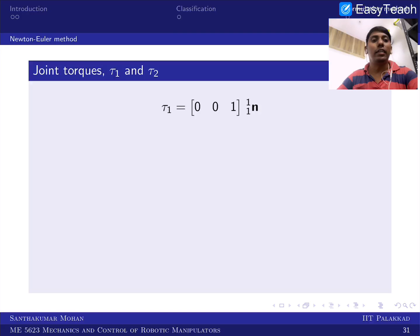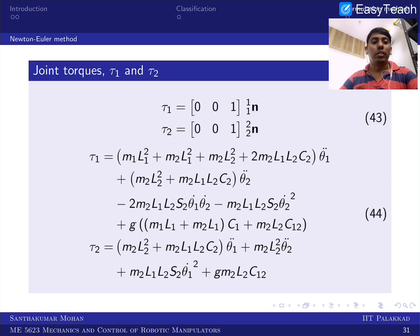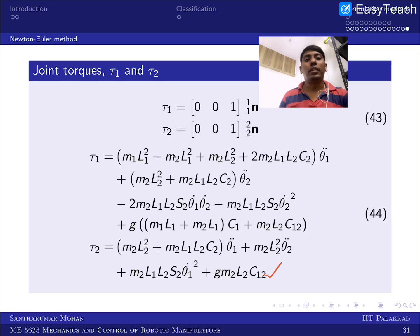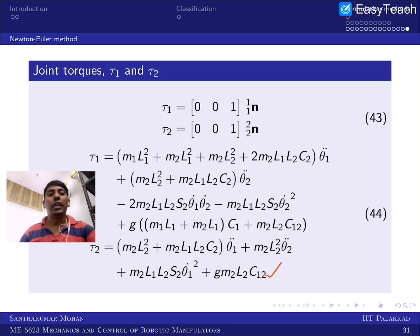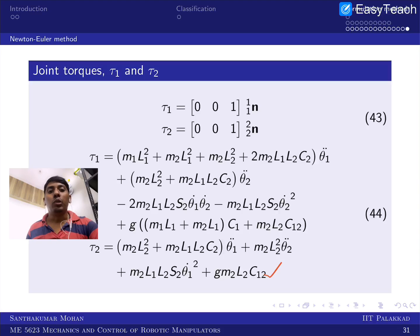Calculating τ₁ and τ₂ and substituting into the equations gives results identical to those obtained via the Lagrangian-Euler method. This confirms the correctness of the Newton-Euler approach. This concludes the session on robot motion dynamics. In the next tutorial session we will use computational methods — specifically MATLAB with the symbolic math toolbox — to obtain these results more easily.